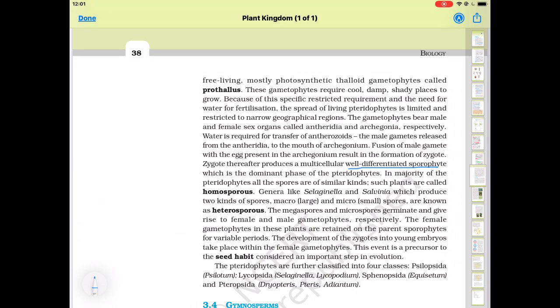In majority of the pteridophytes all the spores are of similar kind. Such condition is known as homosporous. If the spores are of same type example is Selaginella. In Selaginella the spores are of same type but sometimes two kinds of spores are produced large are known as macrospores and small are known as microspores. Macro represent the female and micro represent the male. Then such condition is known as heterosporous.